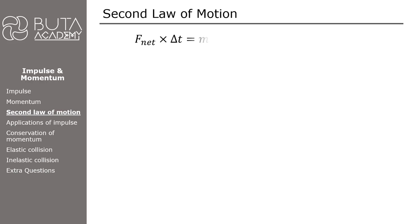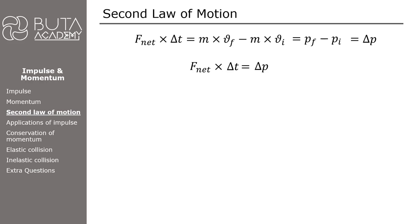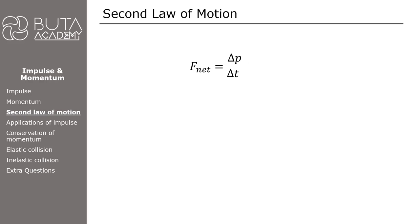Net force multiplied by time of impact equals mass times final velocity minus mass times initial velocity. The quantity equal to the product of mass and velocity is called momentum. So this expression equals the change in momentum. Therefore, net force times impact time equals the change in momentum of an object. After rearranging, we find that net force is equal to the ratio of change in momentum to change in time, delta p over delta t.